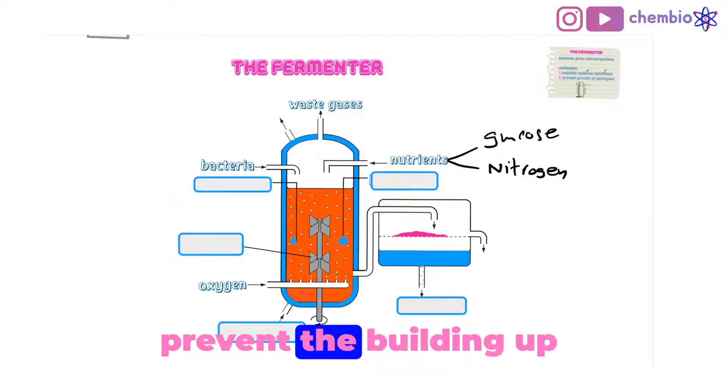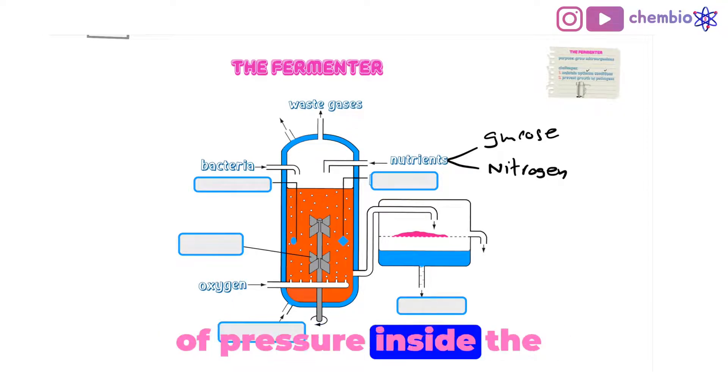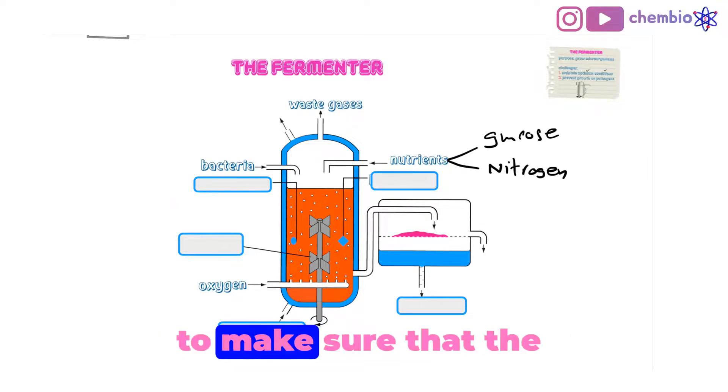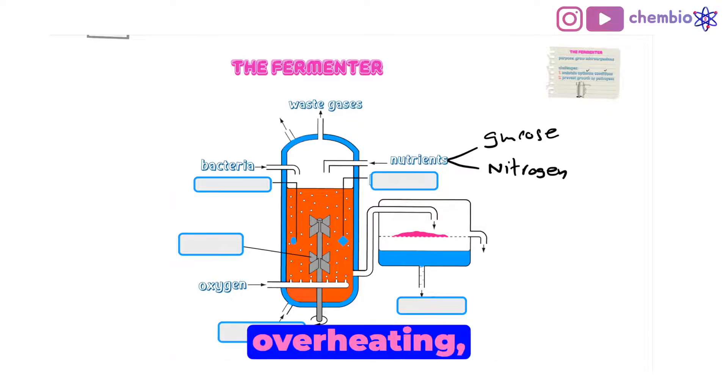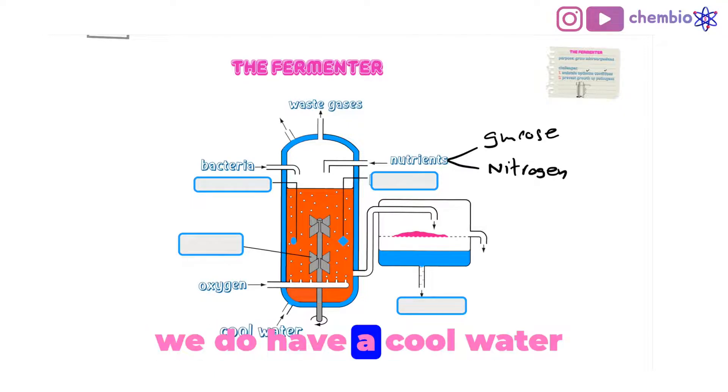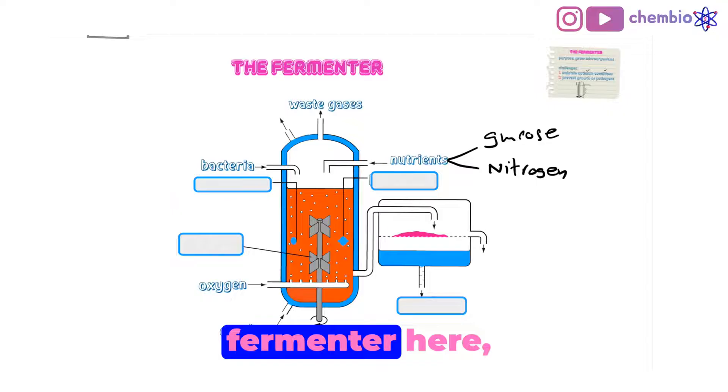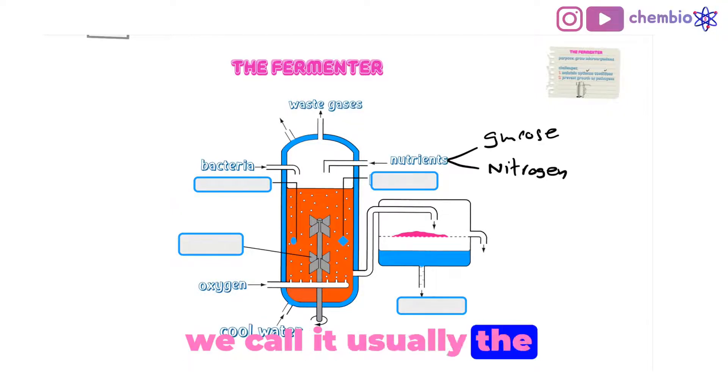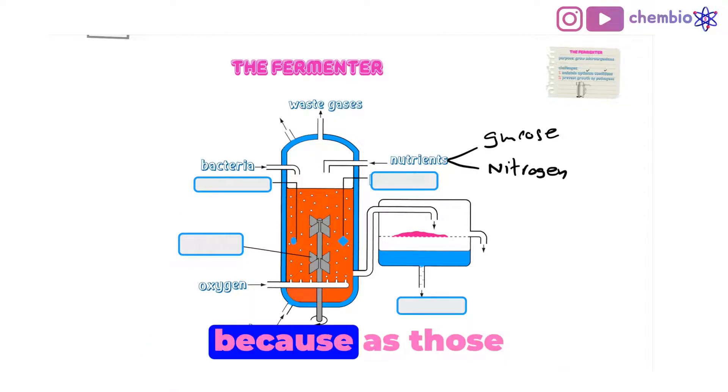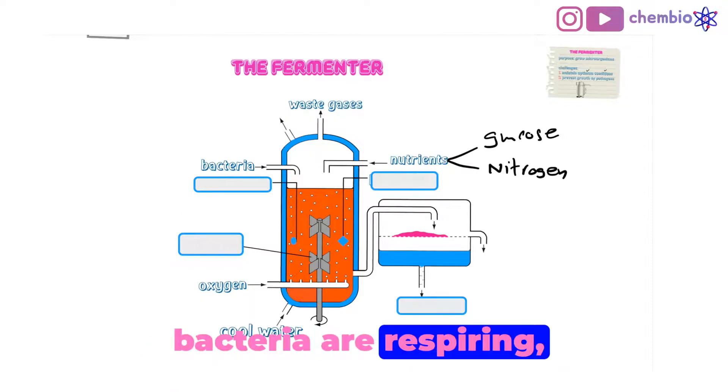To make sure that the fermenter is not overheating, we have a cool water cycle running around the fermenter. Here is shown in blue. This cool water cycle, we call it the water jacket, helps to cool down the fermenter. Because as those bacteria are respiring, they will release heat energy and that will overheat the fermenter.